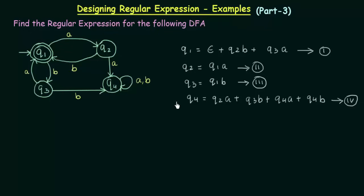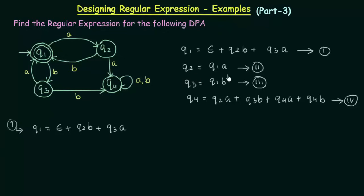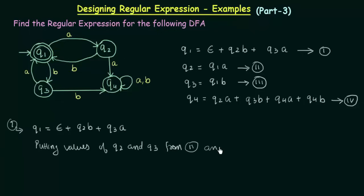Now we have written the equations for all the states. Let's take the final state and try to simplify it. The final state is Q1, that is equation number 1: Q1 equals epsilon plus Q2B plus Q3A. We see that Q2 and Q3's values can be substituted from equations 2 and 3. Putting values of Q2 and Q3 from equations 2 and 3.